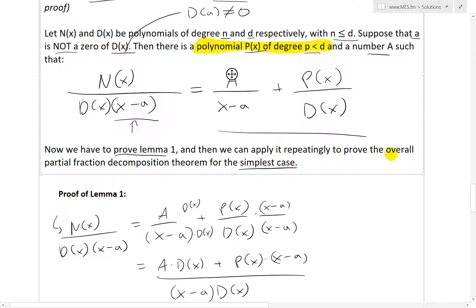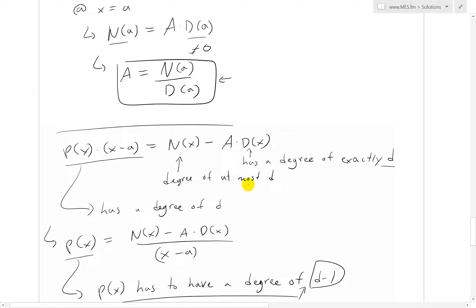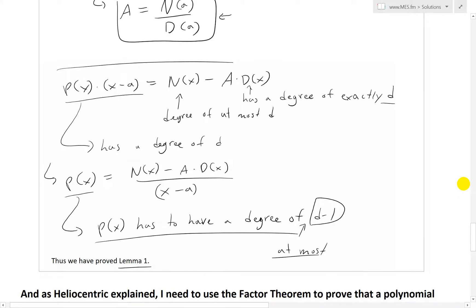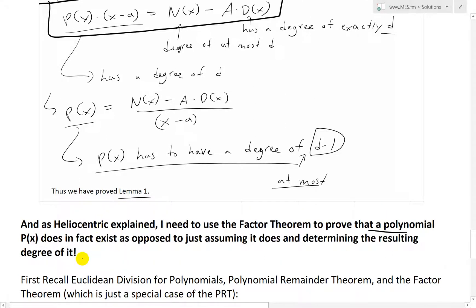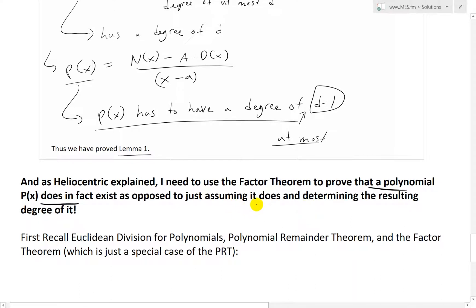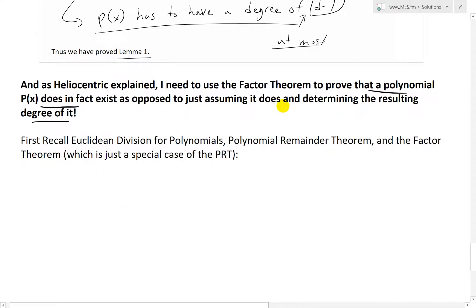Now we have to prove lemma 1, and then we can apply it repeatedly to prove the overall partial fraction decomposition theorem for the simplest case. I went over the derivation and showed that degree of at most d. I said P(x) has a degree of d minus 1 at most. Then I stated that thus we have proved lemma 1. But this is only if P(x) is a polynomial. But I haven't proved that it's actually a polynomial. As Heliocentric explained, I need to use the factor theorem to prove that a polynomial P(x) does in fact exist.